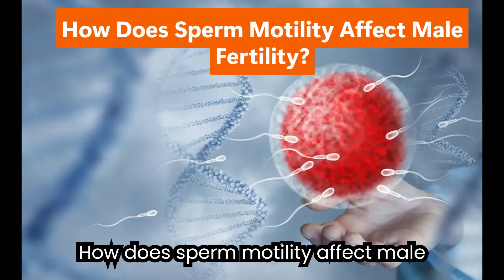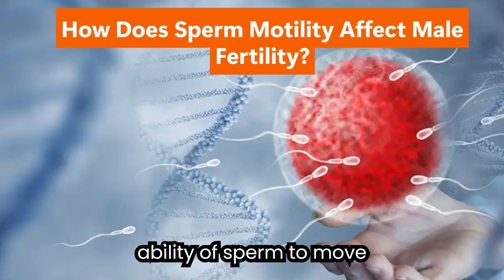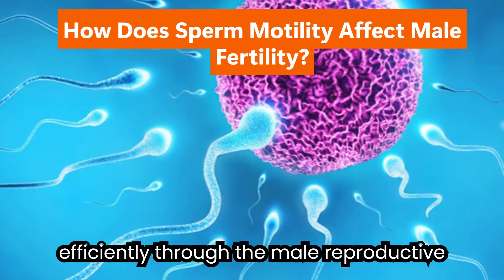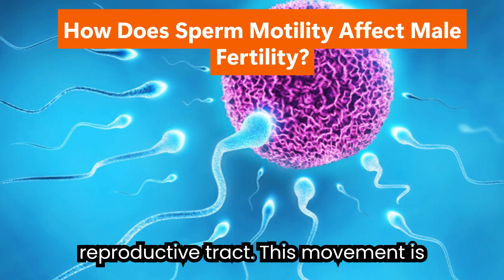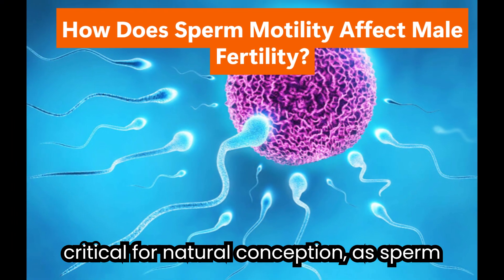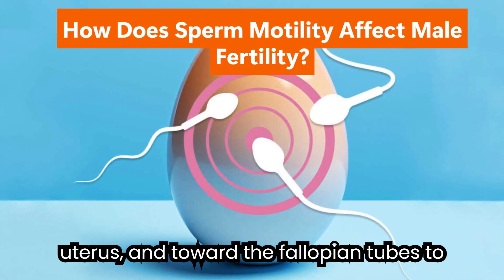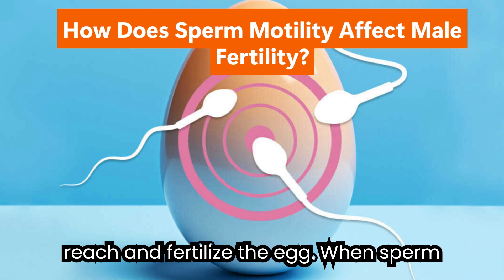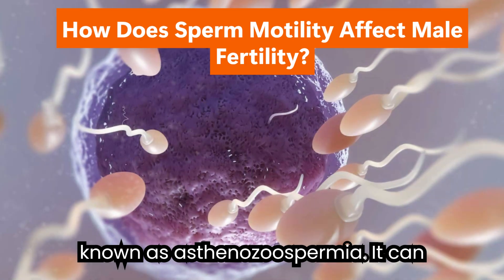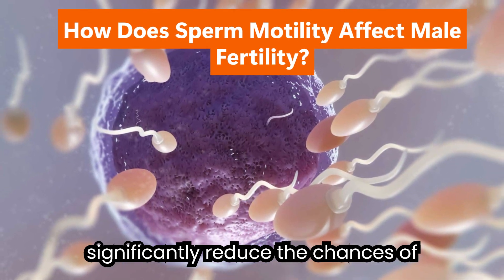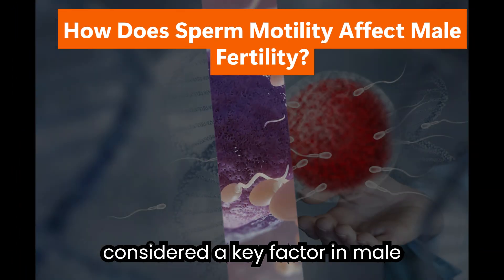How does sperm motility affect male fertility? Sperm motility refers to the ability of sperm to move efficiently through the male reproductive system and, ultimately, the female reproductive tract. This movement is critical for natural conception, as sperm must travel through the cervix, into the uterus, and toward the fallopian tubes to reach and fertilize the egg. When sperm motility is low — a condition known as asthenozoospermia — it can significantly reduce the chances of successful fertilization and is considered a key factor in male infertility.